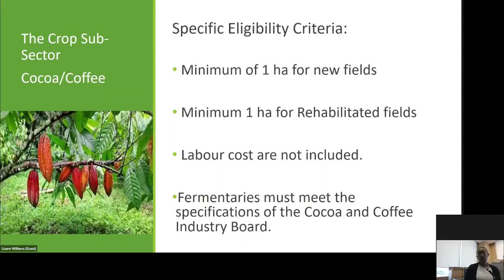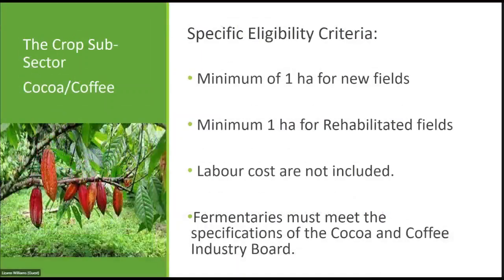For cocoa, the specific eligibility criteria require a minimum of one hectare for new fields and a minimum of one hectare for rehabilitated fields. Labour costs are not included. Fermentaries must meet the specifications of the Cocoa and Coffee Industry Board.